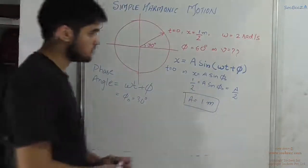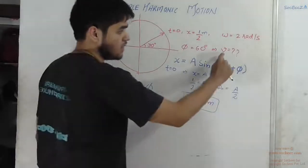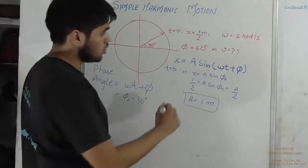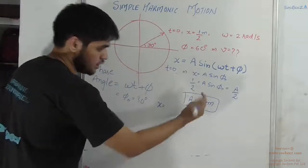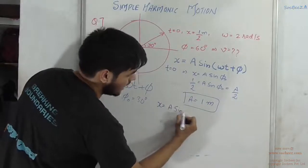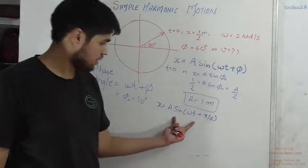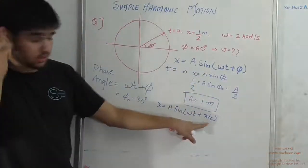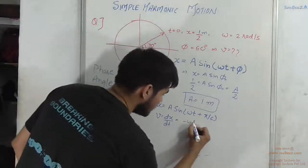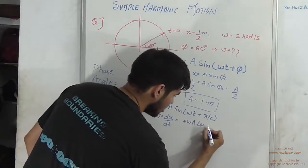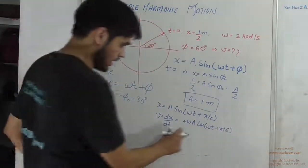Now the general expression for x is: x = a sin(omega t + pi/6), substituting phi₀ = pi/6. Differentiating to find velocity: v = dx/dt = omega × a × cos(omega t + pi/6).